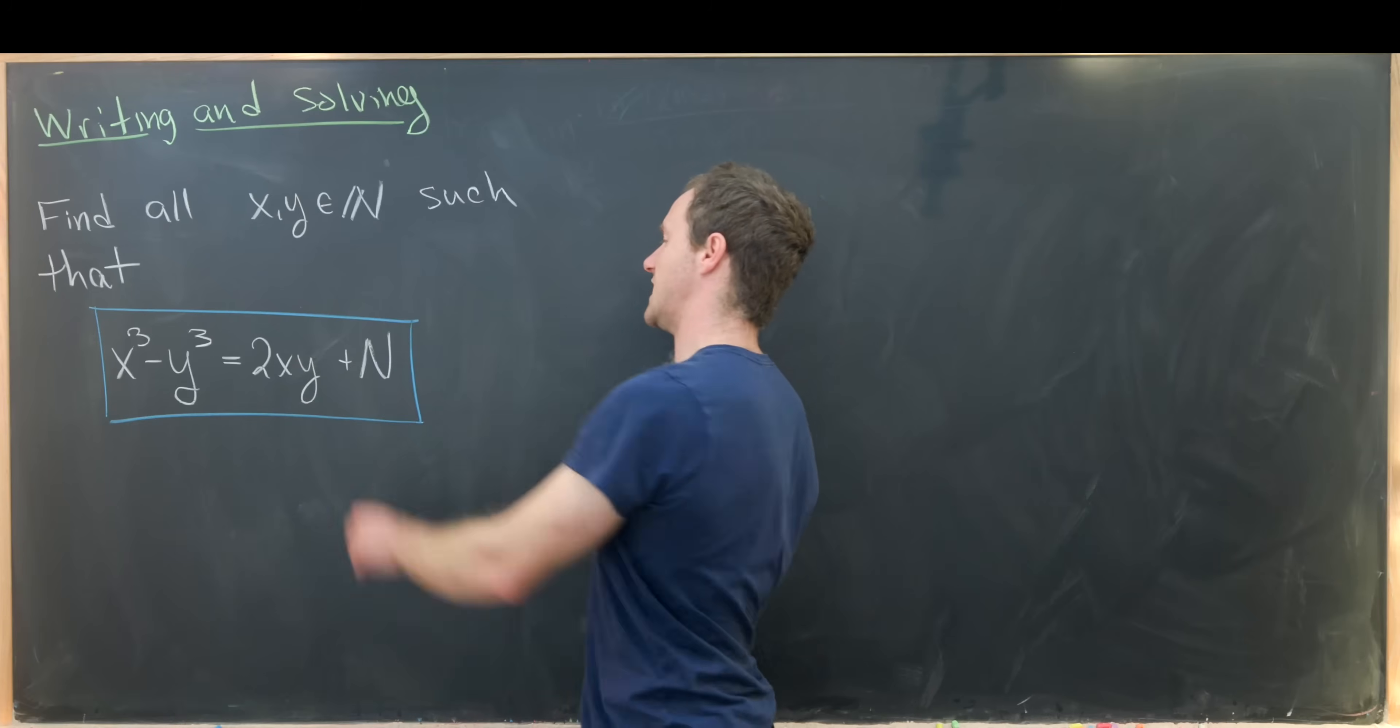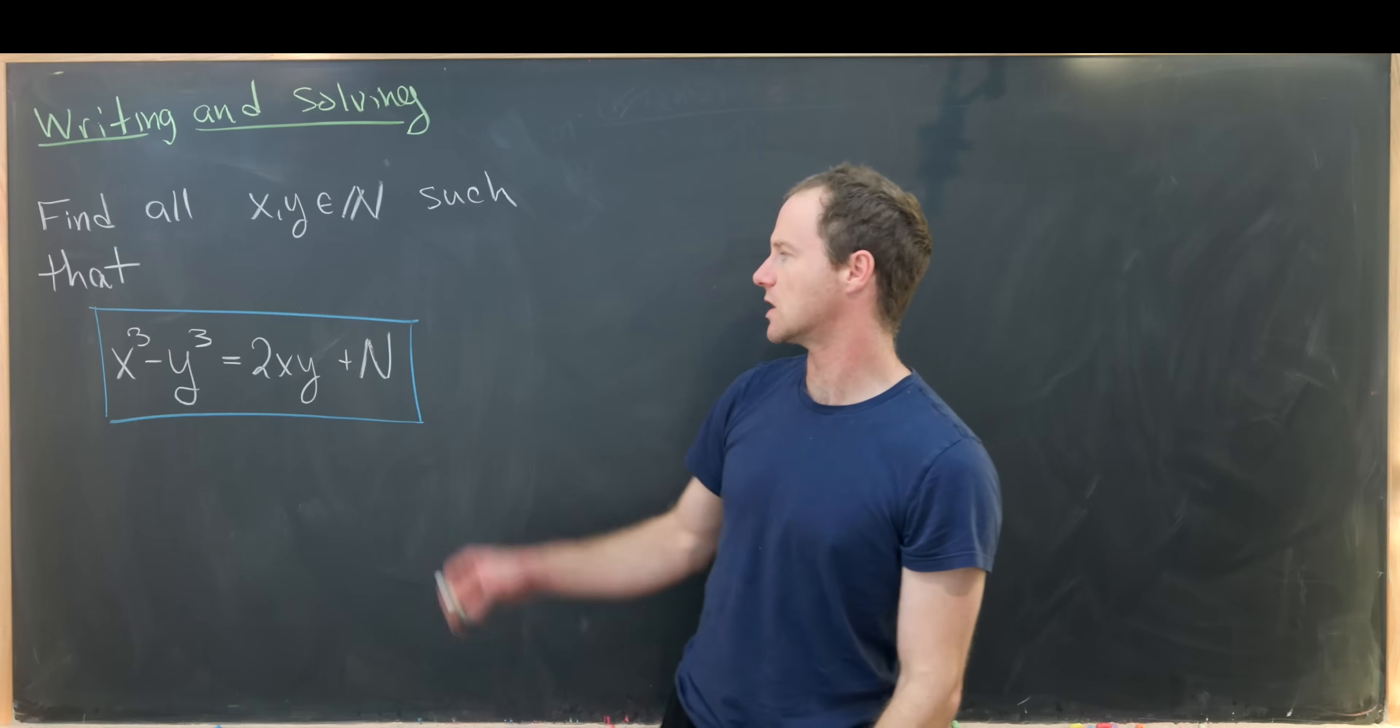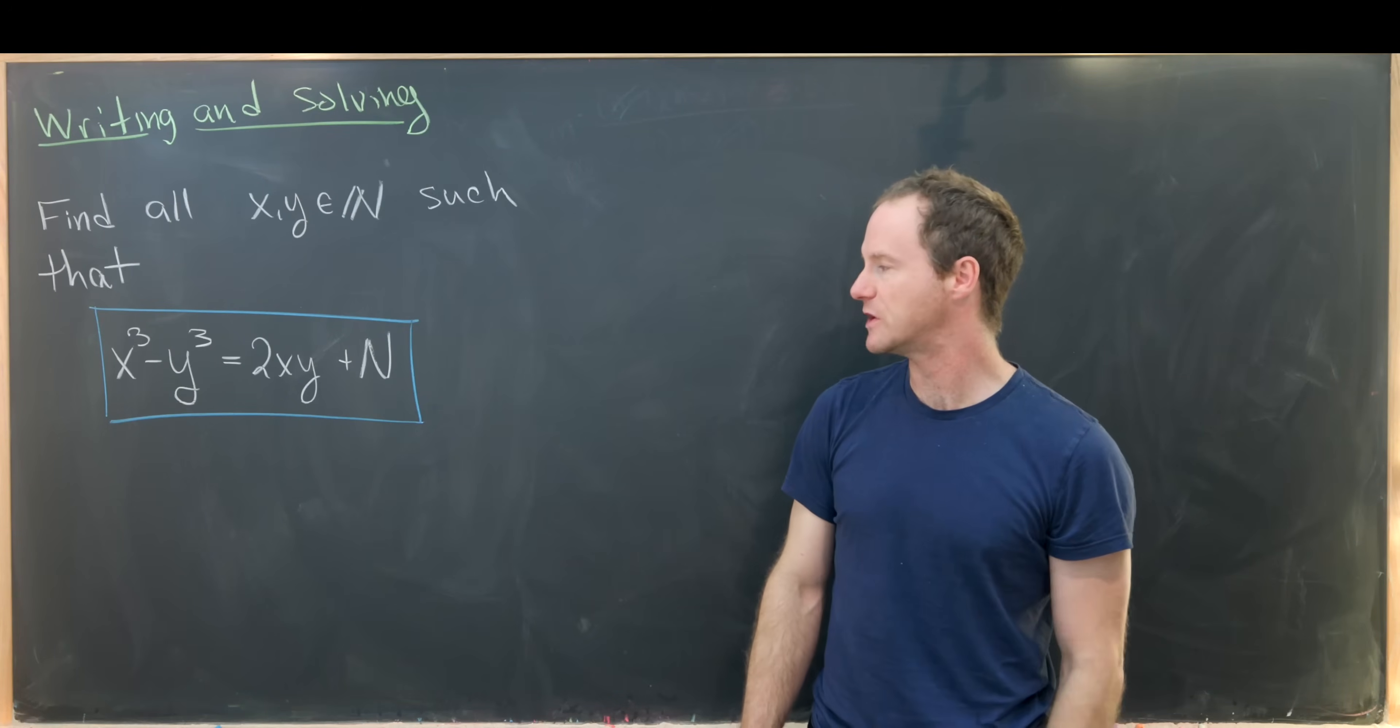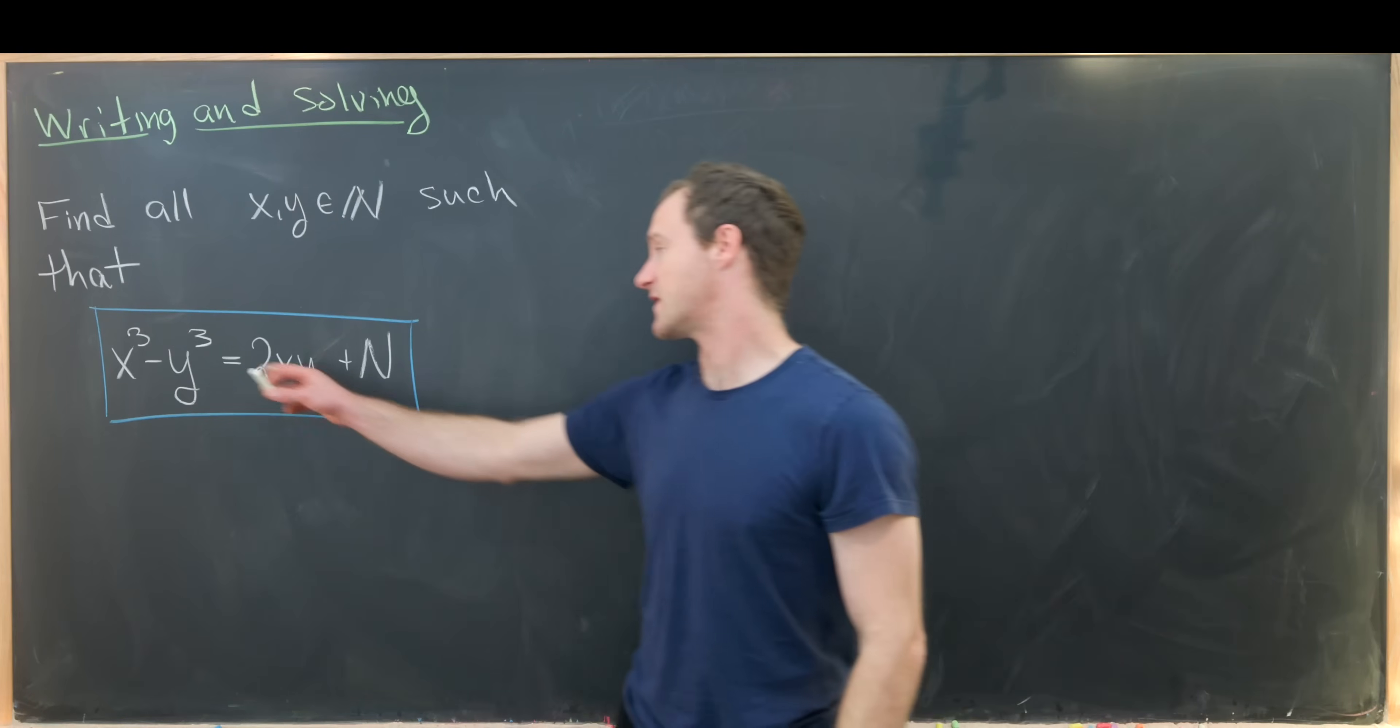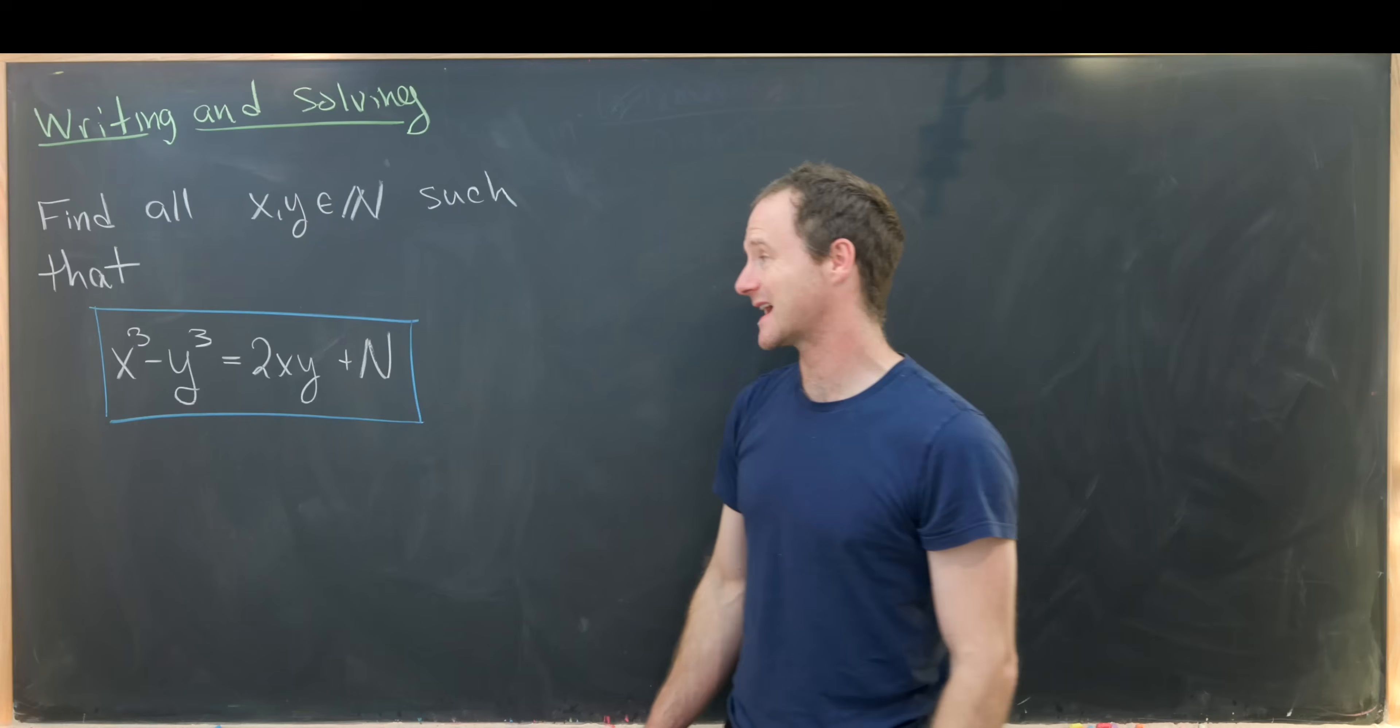Let's notice that this right hand side is most definitely positive, as long as we take N to be positive. That means that the left hand side is also positive, which means that x is strictly bigger than y.